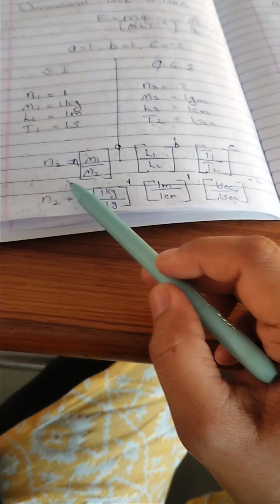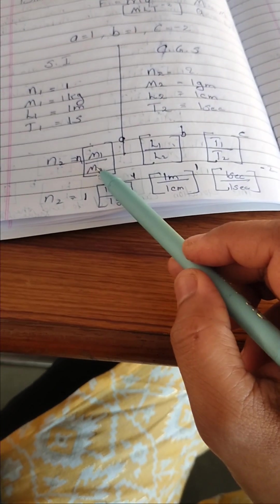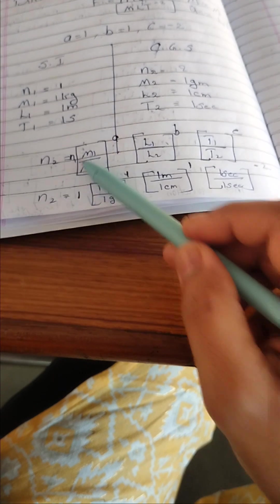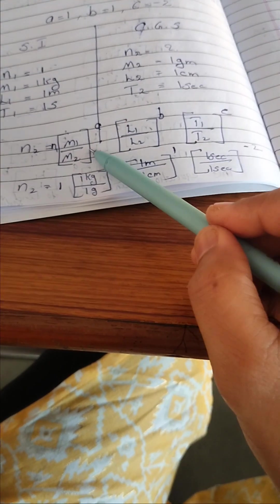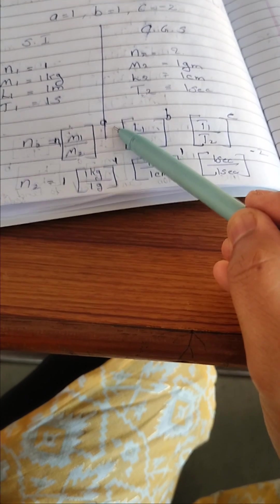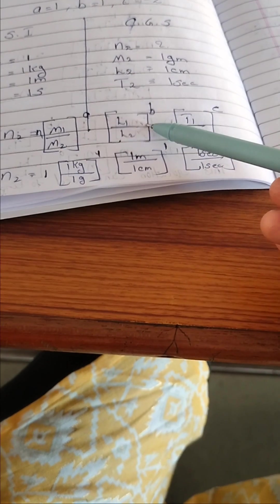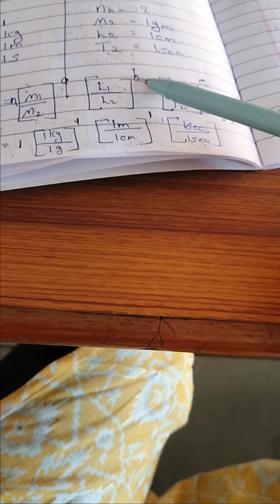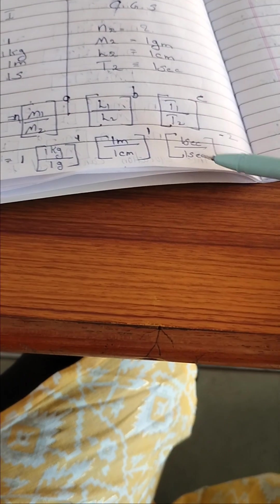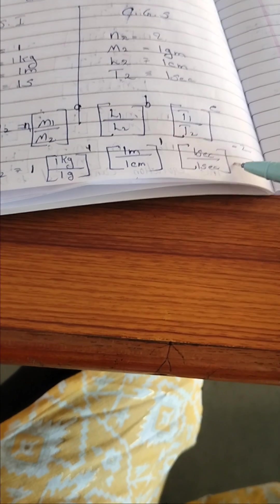So please write the general expression just before we studied. N2 value we want to find out. N1 value 1. M1 value 1 kilogram, M2 value gram. Power of A, 1. L1 value 1 meter, L2 value 1 centimeter. Power B, 1. Time 1 second. The CGS unit is also time is in second. Power is minus 2.